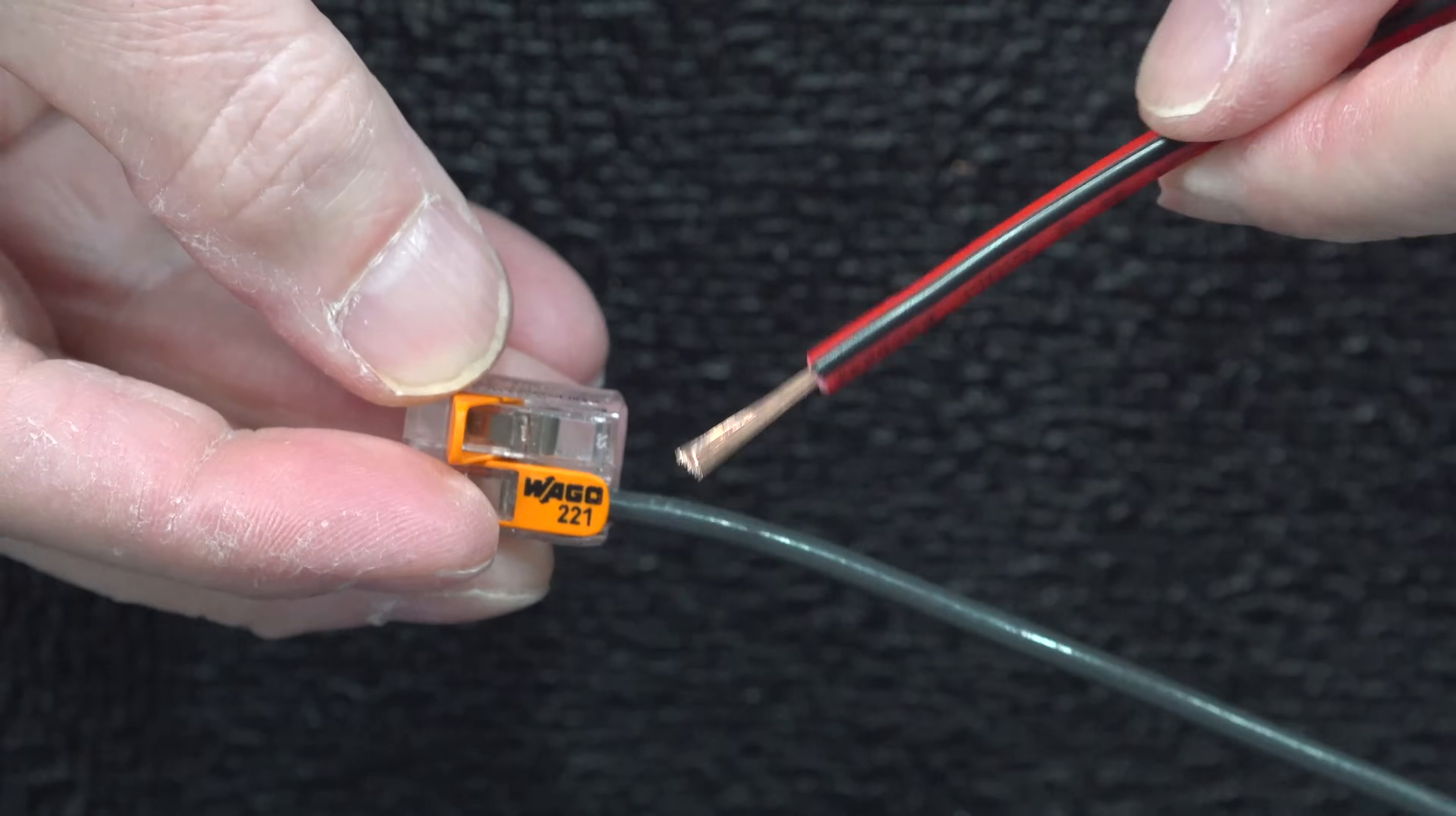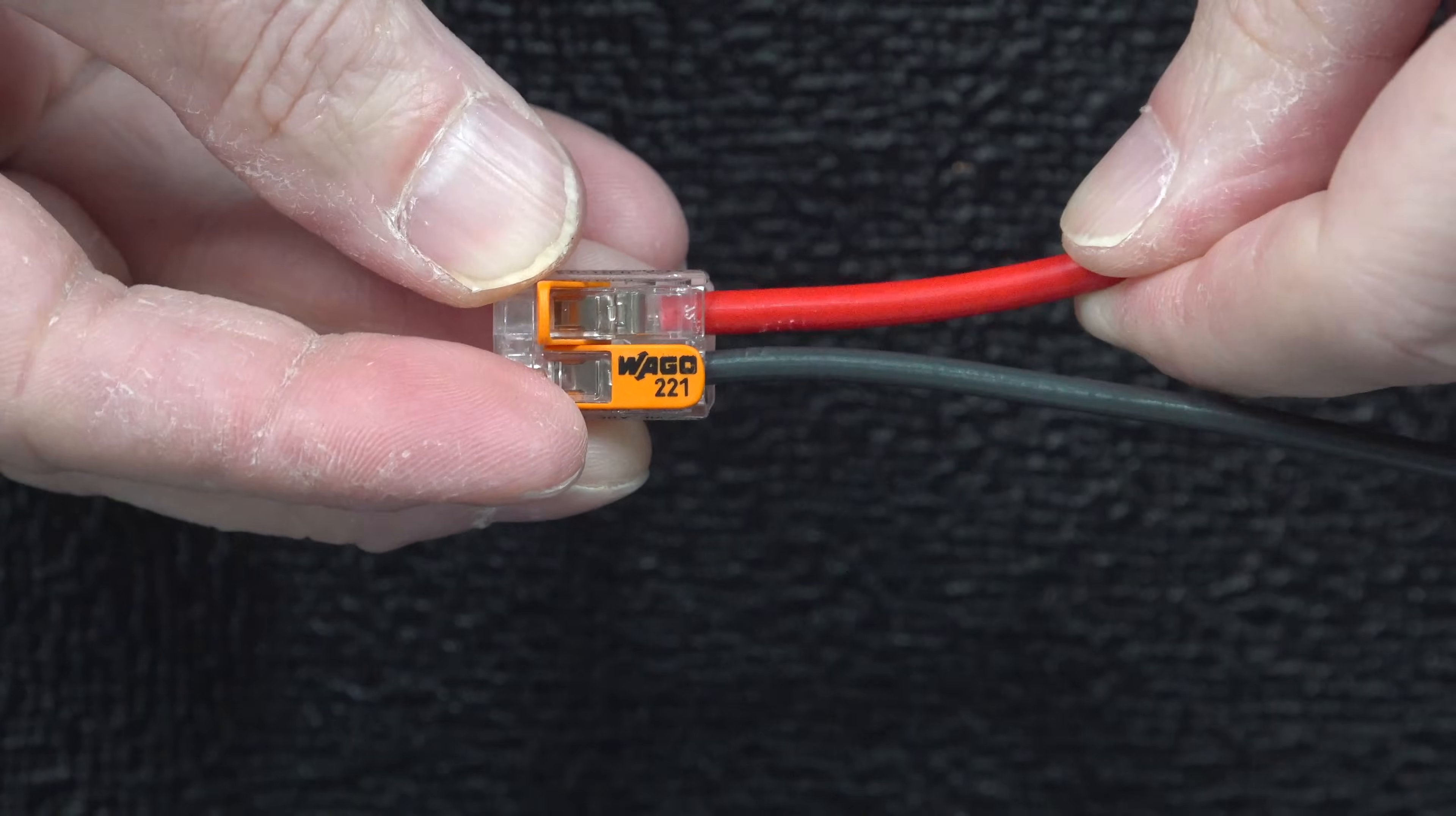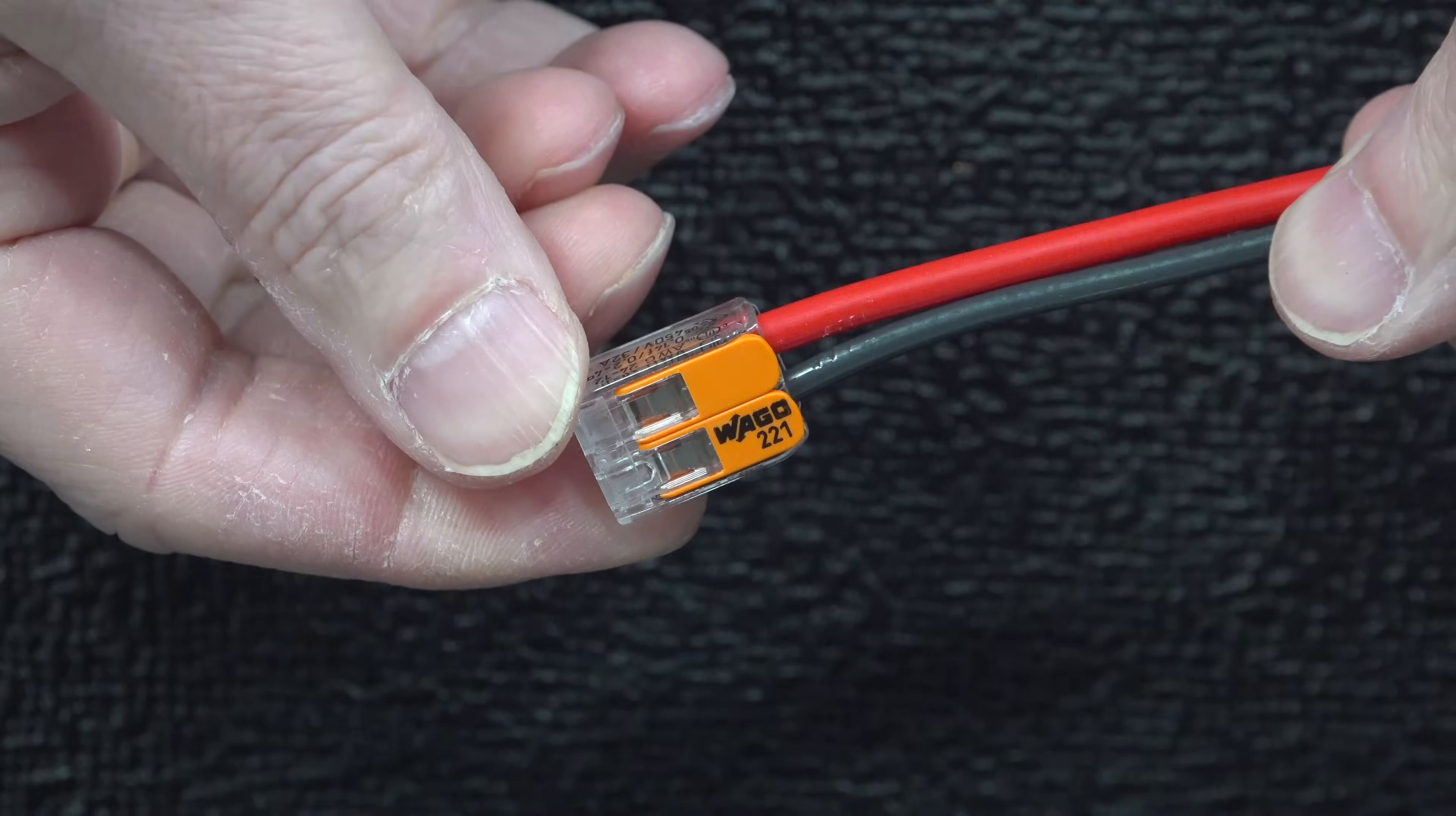But now for the best part, these Wegos can connect stranded wire just as easily as solid, but you can mix them together. So just slide it in the connector, flip the lever closed, and you've got an instant connection, and you don't need any tape to secure it.